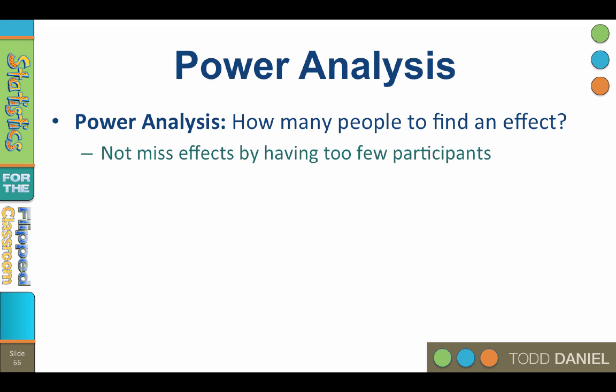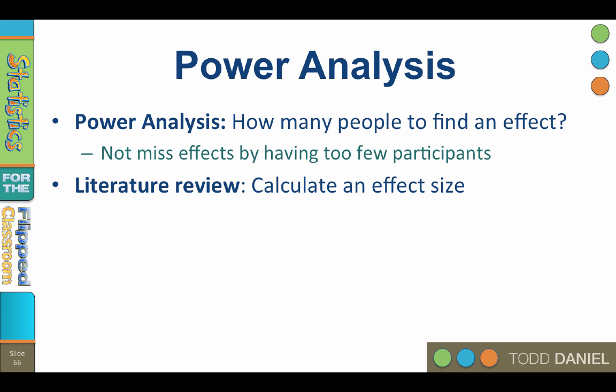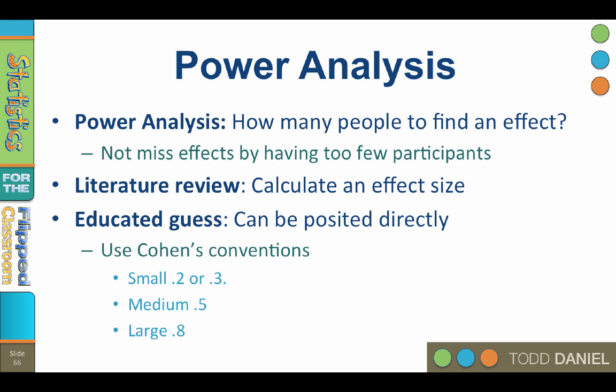Recall the Smith and Jones leadership study. If we do not know the effect size, we could use our literature review to find a similar study and calculate the effect size, or we can make an educated guess. Cohen says this is the advantage of using d for power analysis — that it need not be calculated, it can be posited directly. This is actually the strength of using d. What do you anticipate the differences to be? If you think the differences will be small, pick a d around 0.2 or 0.3. If you think the differences will be large, pick a d near 0.8. For medium, go with 0.5. Then you can conduct your power analysis and discover the power of your test to find effects.